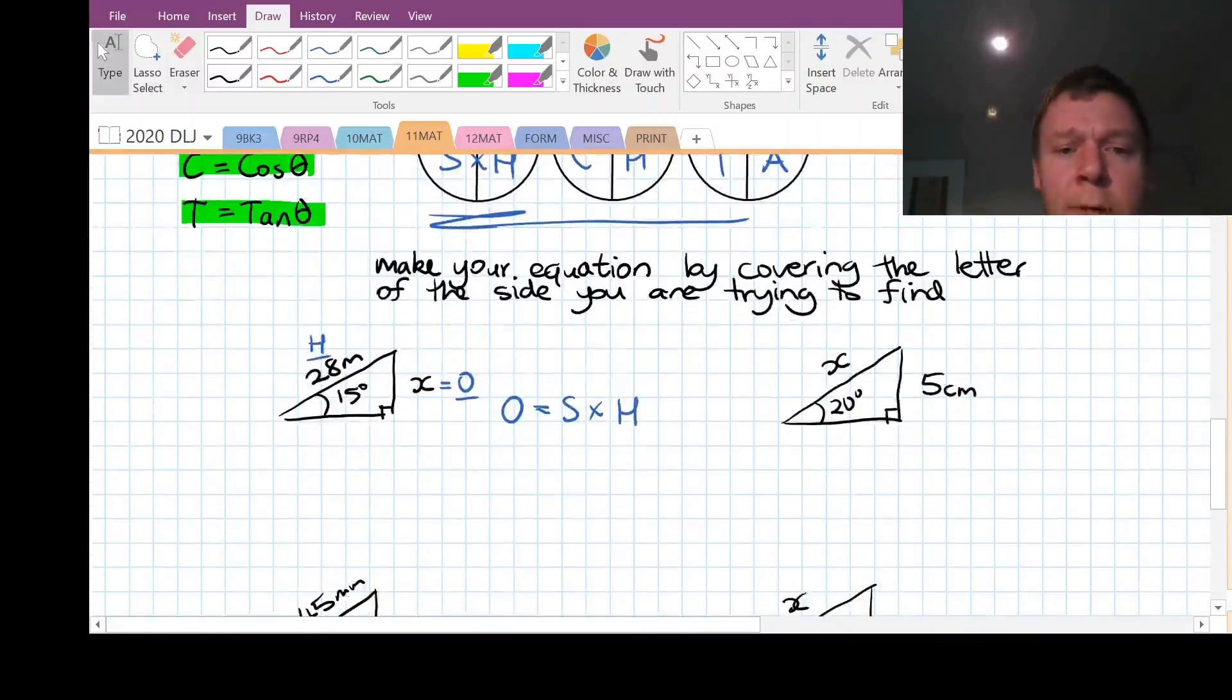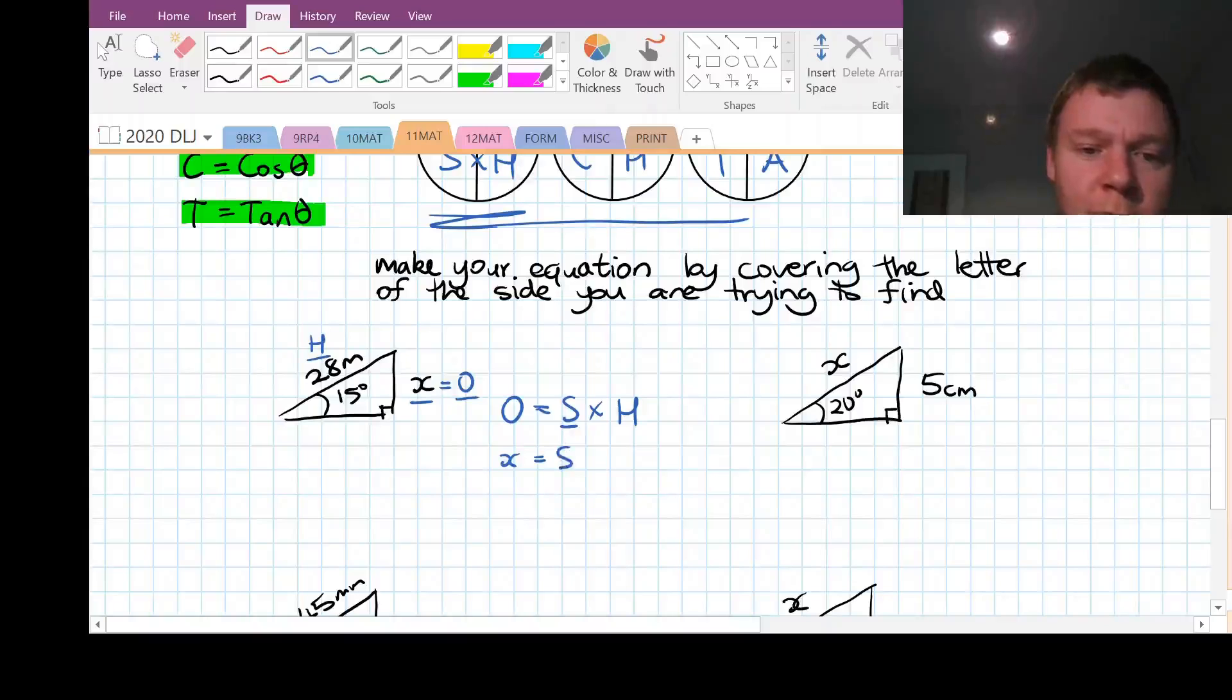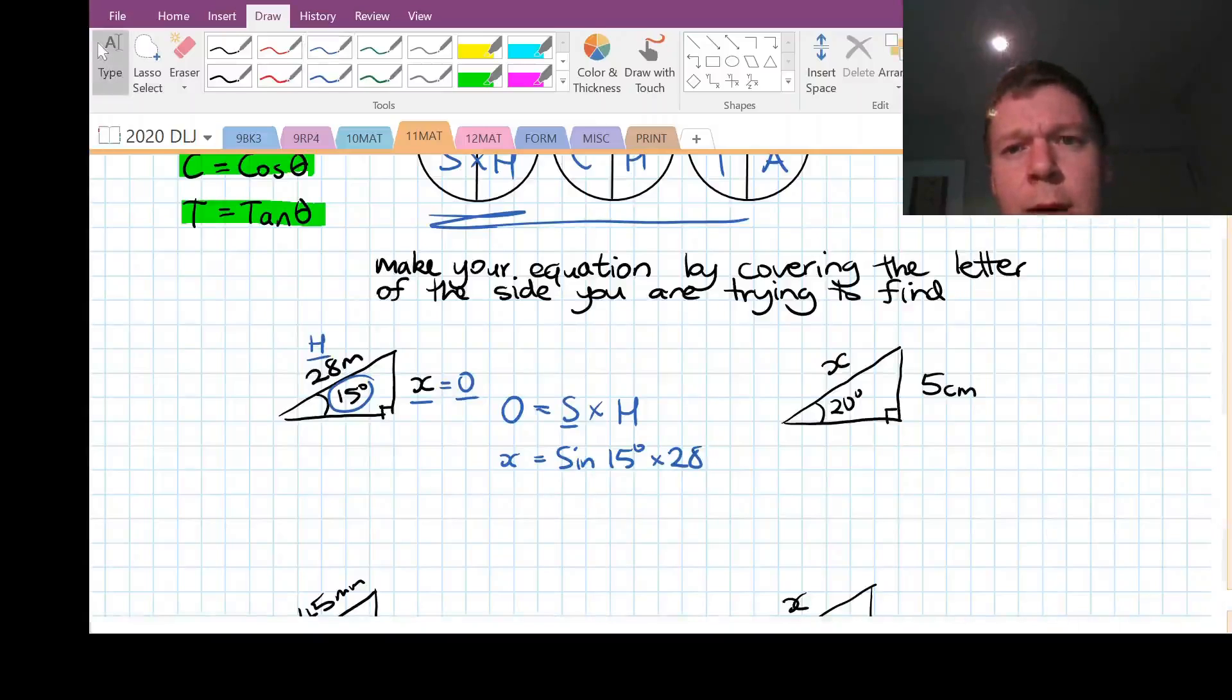Okay. So now we've got to do a bit of filling back in. So what is the opposite? The opposite is X. The S stands for sine, but not just sine. It's sine of the angle. And in this case, our angle is 15 degrees. And our hypotenuse is 28. Okay. So I'm going to bring up a calculator on the screen and see how that works for us.